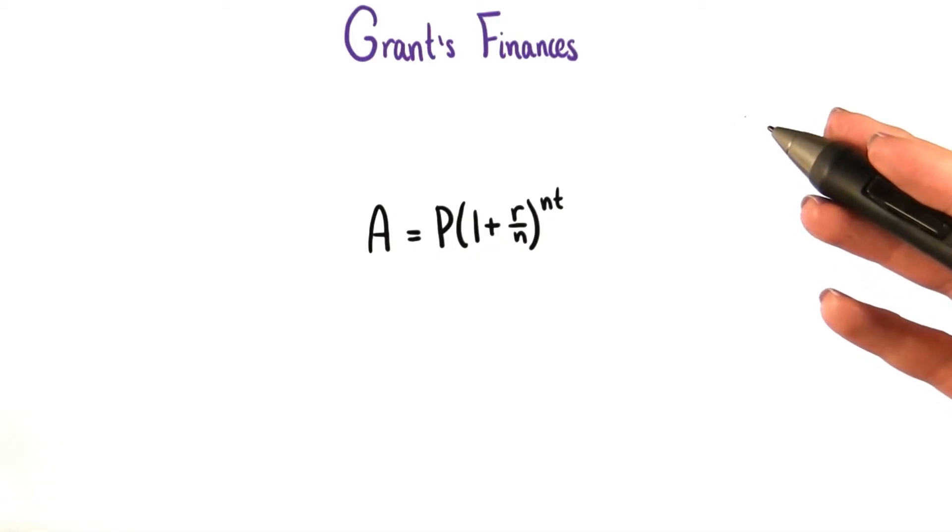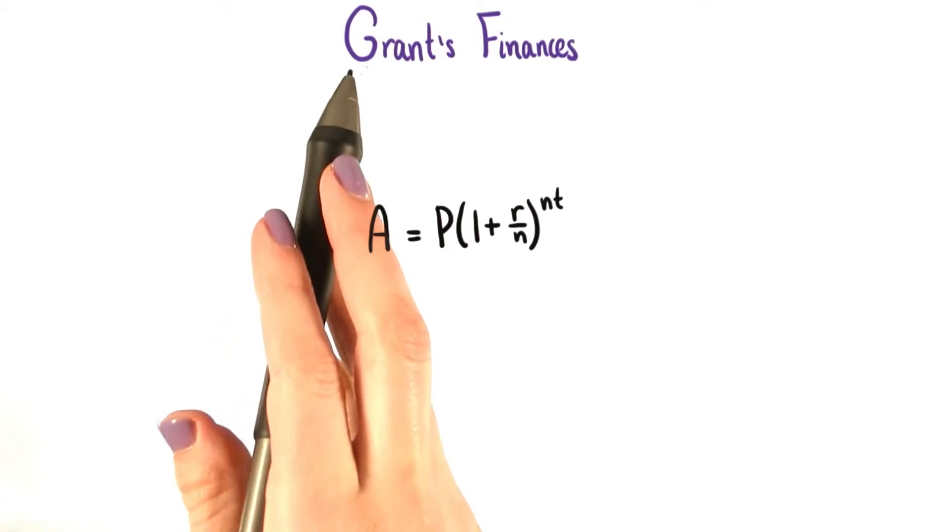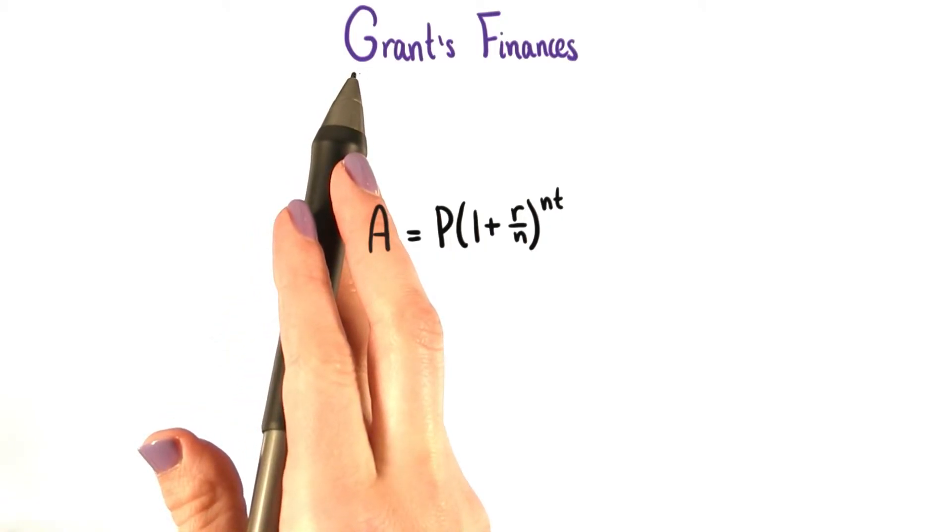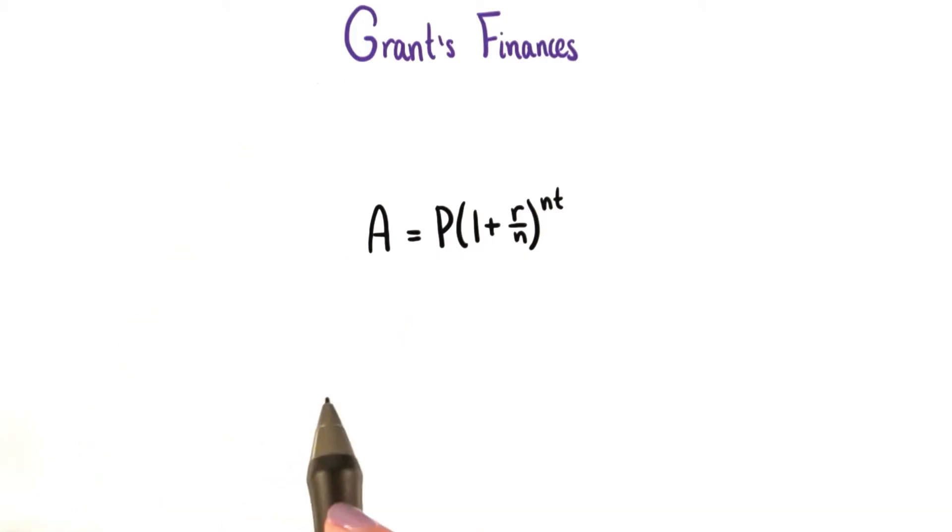Referring back to our formula, A equals P times 1 plus r over n to the nt. We've seen n, the number of times the interest is compounded in a year, equal to several different values in our different situations.